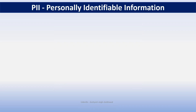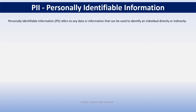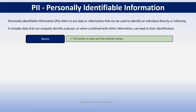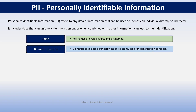Personally identifiable information, which we generally refer to as PII — so what is PII? Personally identifiable information is defined as any information that can be used to identify an individual directly or indirectly. It includes data that can uniquely identify a person, or when combined with other information, can lead to their identification. These include names — full name or just first or last name — and biometric records like fingerprints or iris scans, which are used for identification purposes.